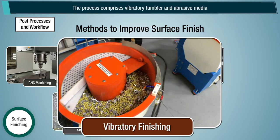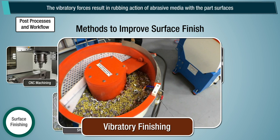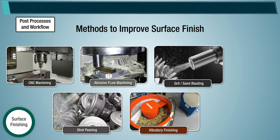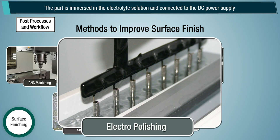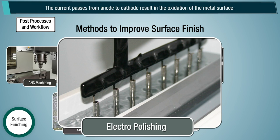Vibratory finishing uses a vibratory tumbler and abrasive media; the part is submerged in the tumbler and vibratory forces result in rubbing action of abrasive media with the part surfaces. Electropolishing immerses the part in an electrolyte solution connected to a DC power supply, where the positive terminal acts as anode and negative as cathode; current passing from anode to cathode results in oxidation of the metal surface, which gets deposited on the cathode.